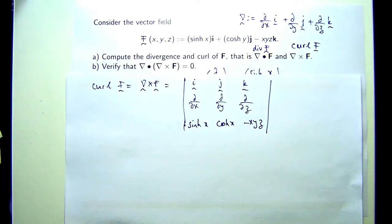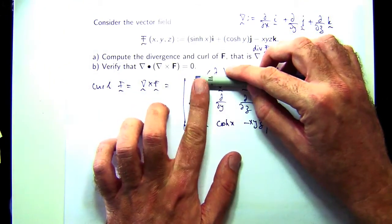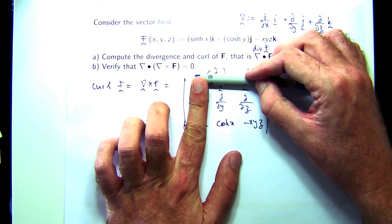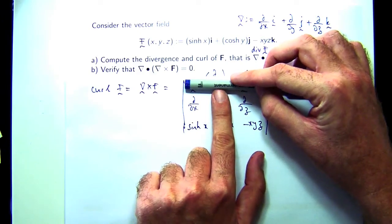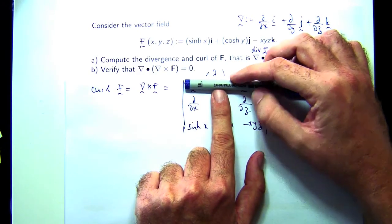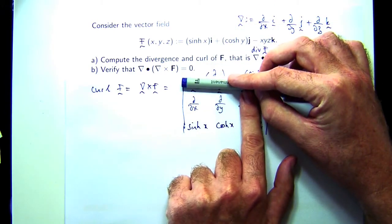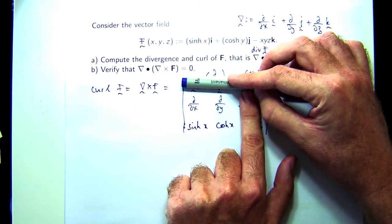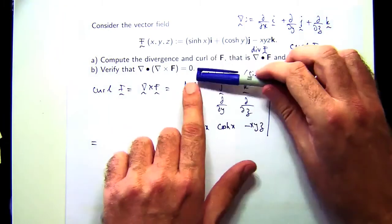With determinants, you can expand along the top row. You start with i, you cover up the row and the column that i's in, and you multiply by the determinant of what's left. Move on to the j, cover up the row and the column that j's in. Move on to the k, cover up the row and the column that k's in. That's the easiest cover-up method. It means you don't have to remember anything.